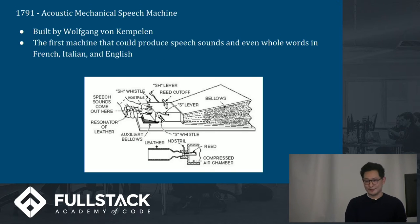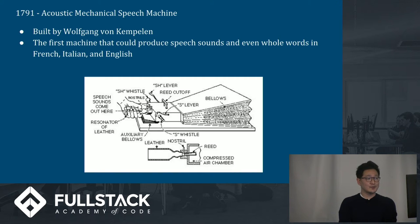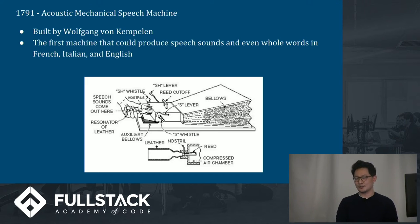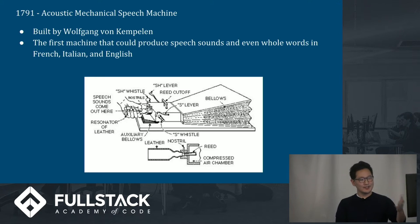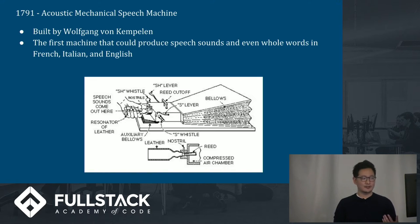For a brief history: in 1791, we get the first acoustic mechanical speech machine built by Wolfgang von Kempelen. He's also known for the Turk automaton, a fake chess player that turned out to be a big fraud. With a skilled user, this machine could produce full sentences in French, Italian, and English.